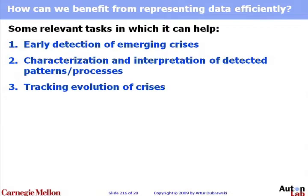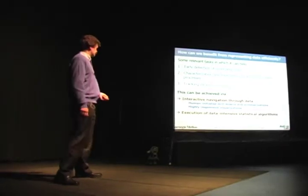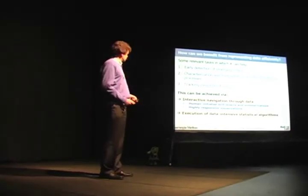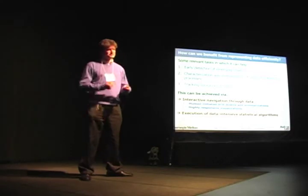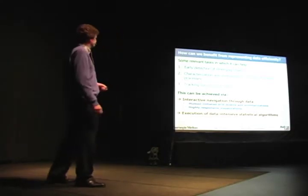So how can we benefit from representing data efficiently in this kind of environment? Well, it can support analytics in various ways. It can help us deal with more things at the same time and also speed up the processing. So all applications involving early detection of emerging crisis, characterization of those crises, or tracking them would benefit. Also, we can achieve interactive navigation capability that will give users a much more intimate contact with their data than they ever had before, leading to highly responsive visualizations.